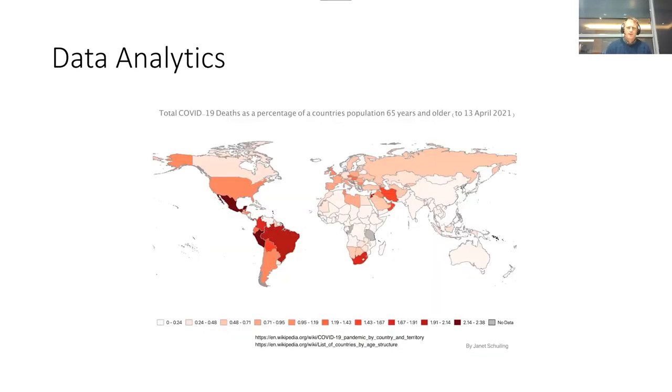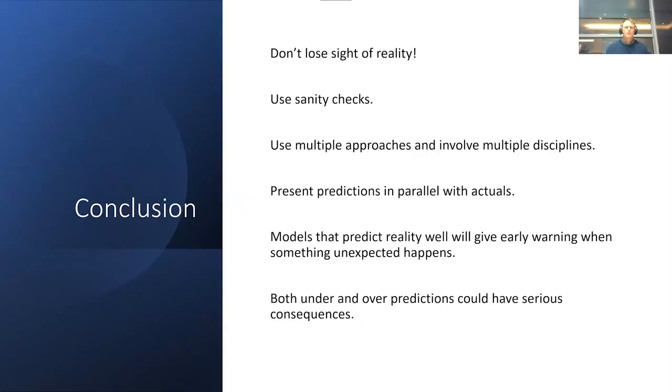My last slide is just another angle that one can use - data analytics, which can also tell you a lot of information as opposed to the SIR model. In conclusion, I believe we should not lose sight of reality. We should use sanity checks, should use multiple approaches, and involve multiple disciplines. This point is important: predictions need to be presented in parallel with actuals. This will also help keeping epidemiologists honest and avoid extreme forms of a cautionary principle. Models that predict reality well will give early warning if something unexpected happens. Both over and under predictions could have serious consequences.